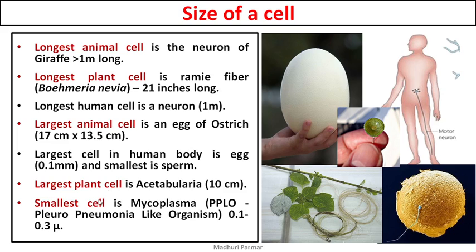The smallest cell across all kingdoms is mycoplasma, also known as PPLO or pleuro-pneumonia-like organism — mycoplasma and PPLO are the same. They are 0.1 to 0.3 microns long — that tiny. 0.1 micron means 10 to the power of minus 7 meters. Micron is 10 to the minus 6 meters, and 0.1 micron is 10 to the minus 7 meters. So the smallest cell is mycoplasma or PPLO.